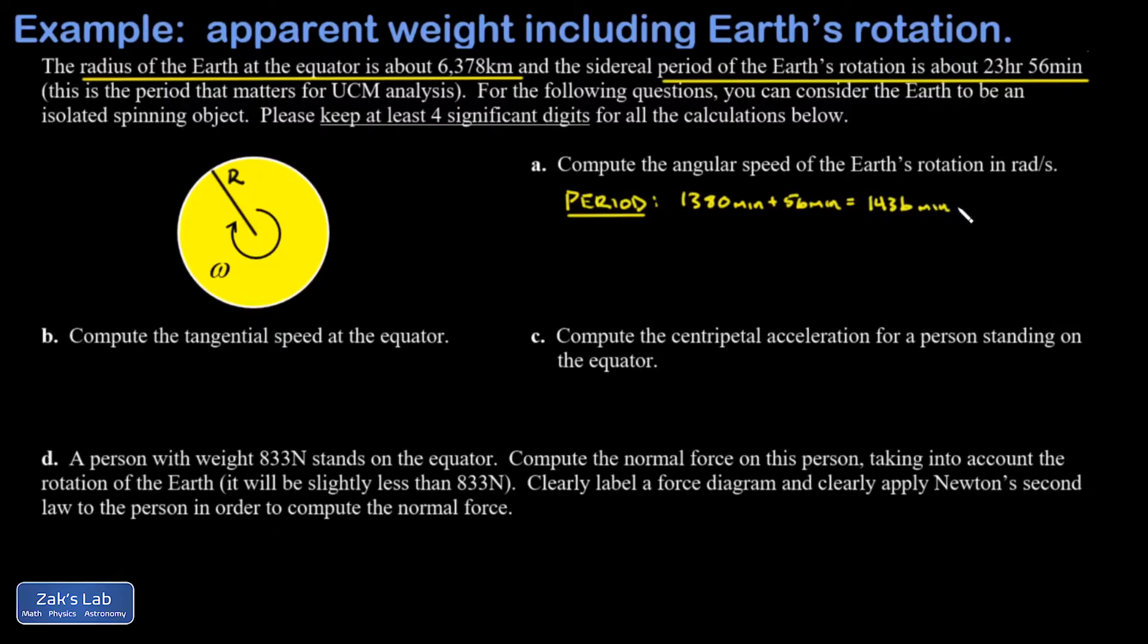I then need to convert that to seconds, so I'm going to multiply by a conversion factor and get 86,160 seconds. To get the angular speed omega, that's measured in radians per second. One rotation is 2π radians and this happens every 86,160 seconds. This results in an angular speed of 7.292 × 10^-5 radians per second.